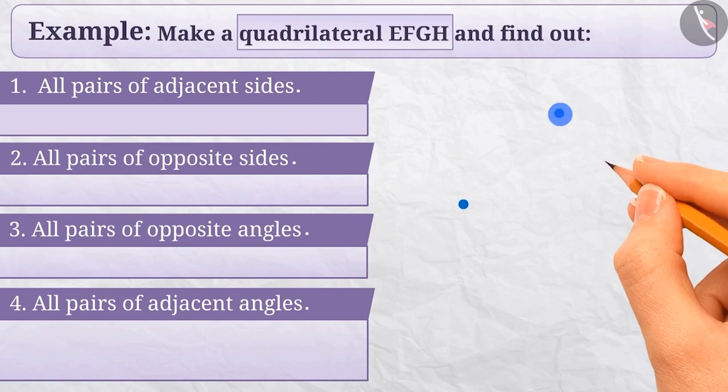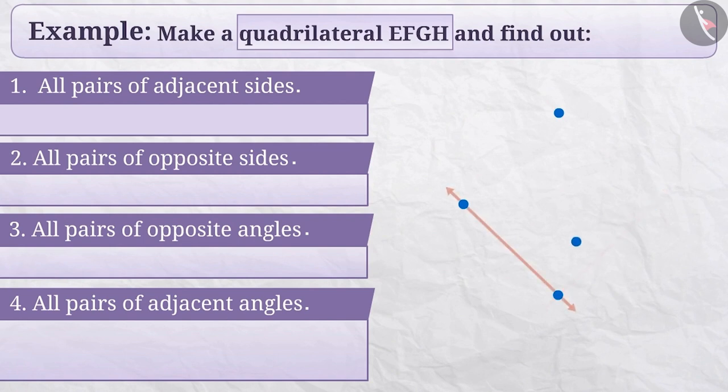First we will make quadrilateral EFGH. For this, we will take 4 points on a paper in such a way that no 3 points come in a line. If they come in a line, it does not form a quadrilateral.